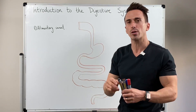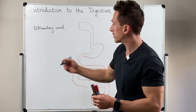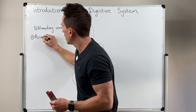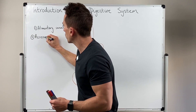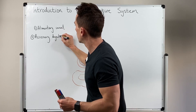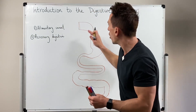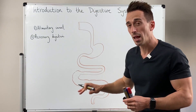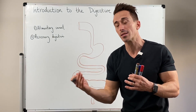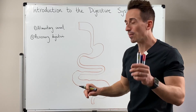Now in addition to the alimentary canal, another primary component of the digestive system are the accessory digestive structures. Accessory digestive structures are not components of the alimentary canal, but they are accessory components, and they often have ducts or tubes that lead into the alimentary canal.